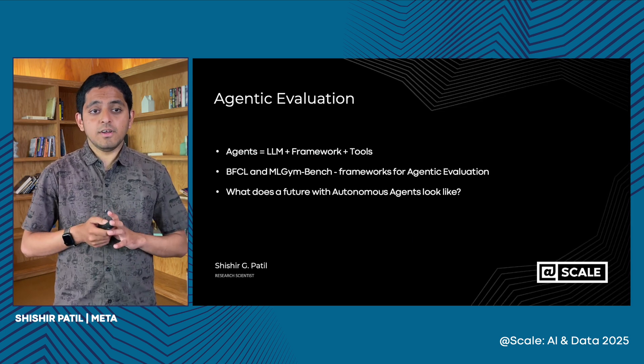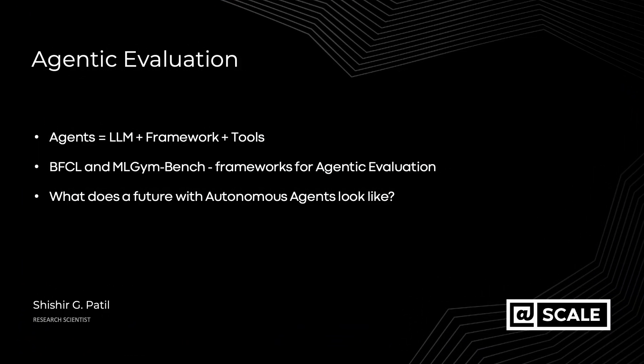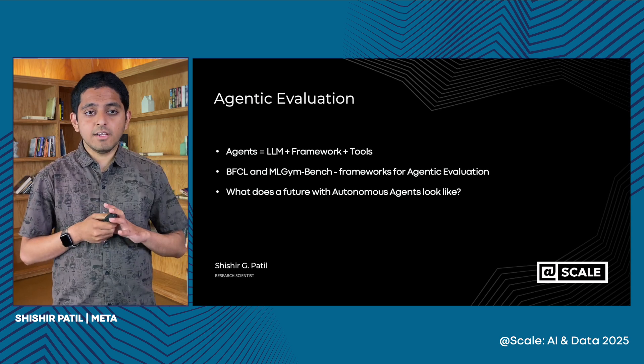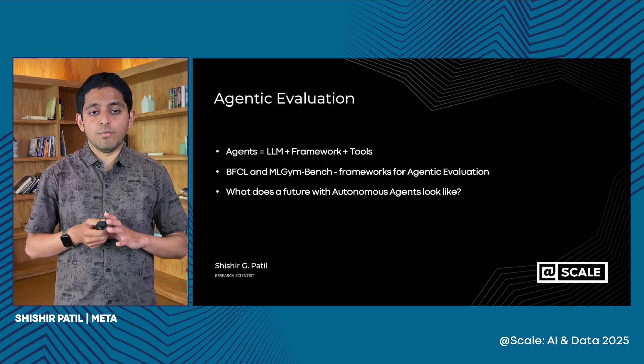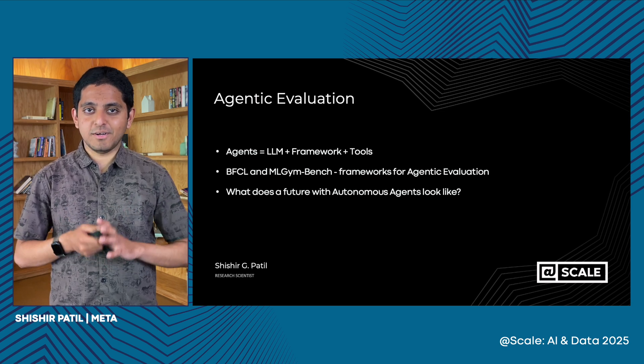Today we looked at agents and agentic evaluation, beginning with one definition of agents — hopefully I've convinced you it's a good definition — which is that an agent consists of three components: the LLM itself, and the framework that orchestrates the LLM with the different tools available. We then looked at the Berkeley Function Calling Leaderboard and the MLGym bench as two rich and robust frameworks for agentic evaluation. And finally, we looked at what the future with autonomous agents looks like, and some of the open research questions there. Thank you very much.